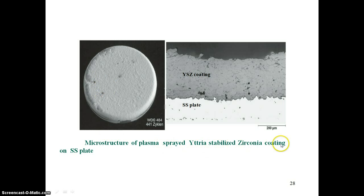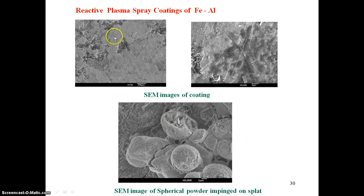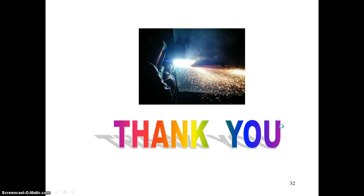The microstructure of plasma-sprayed specialized coating on SS plate is shown. Reactive plasma spraying coatings on nickel-aluminium are presented with images of coatings prepared at 50 kW, and semi-molten particles impressed inside a splat. Using plasma coating, SEM images of iron-aluminium composites are shown at 100 micrometers scale, with three schematic diagrams of the SEM images. Finally, the microstructure of plasma-sprayed aluminium coating on SS substrate is presented, along with the micro-stretches of the SEM.